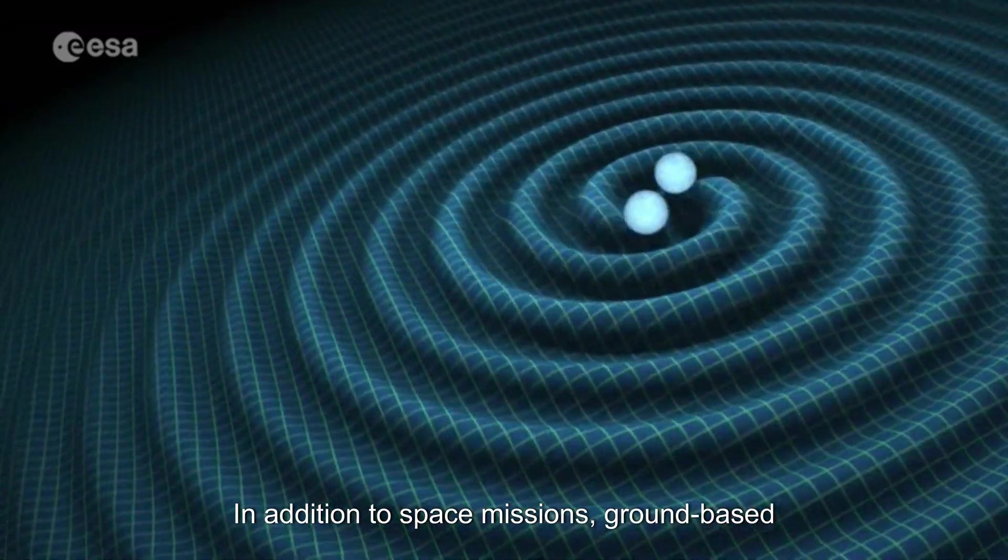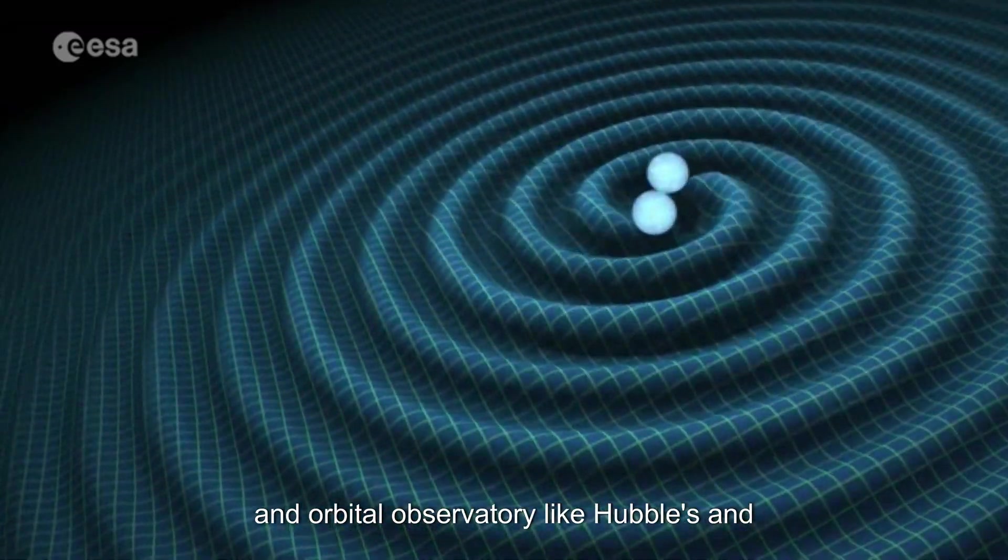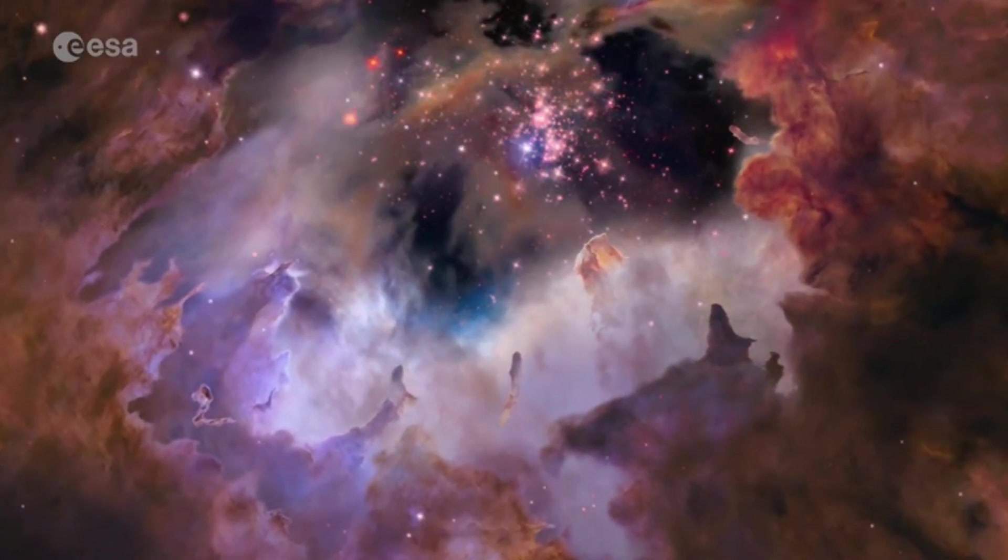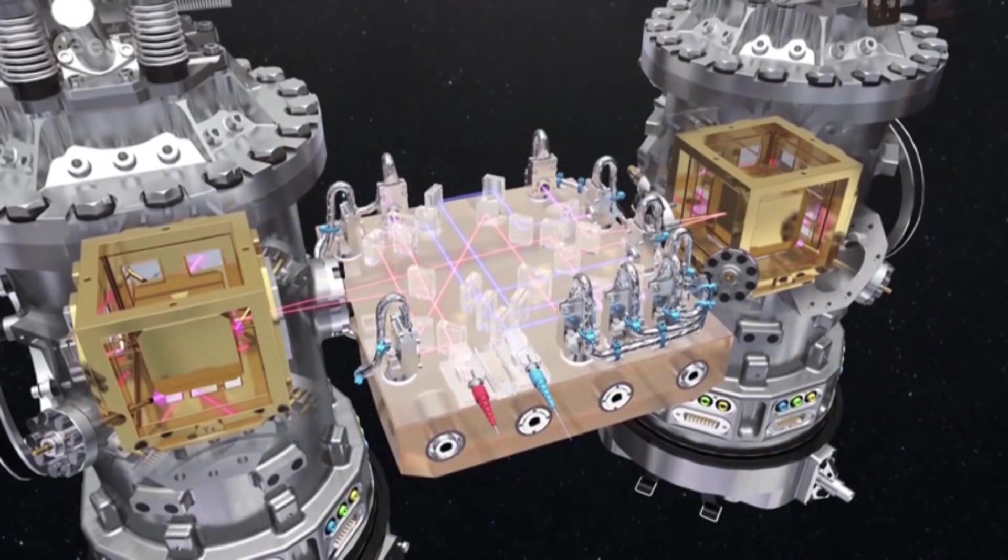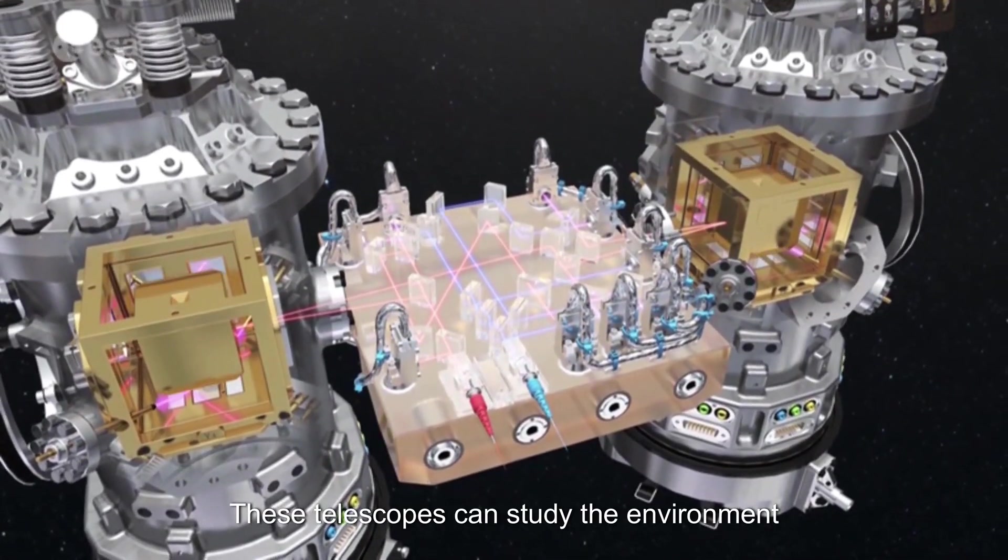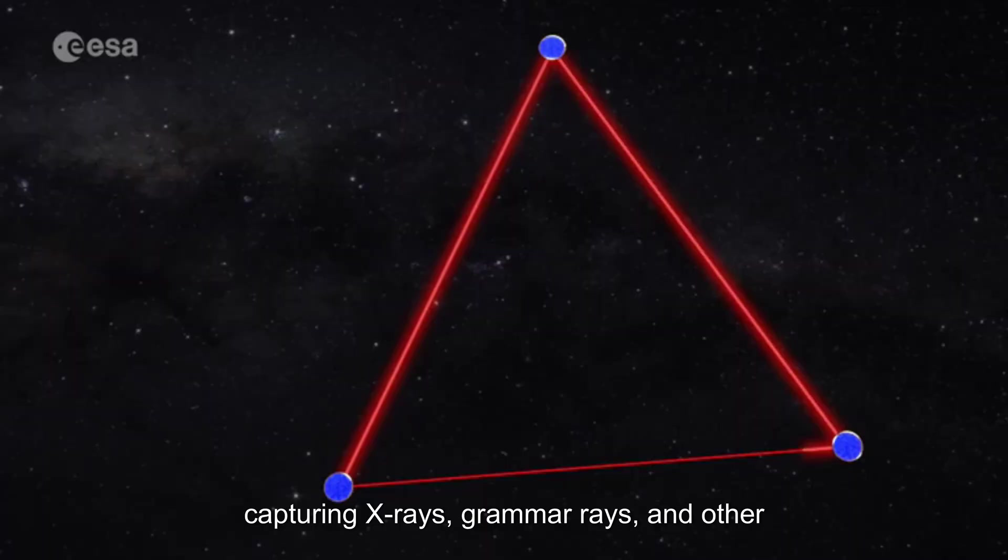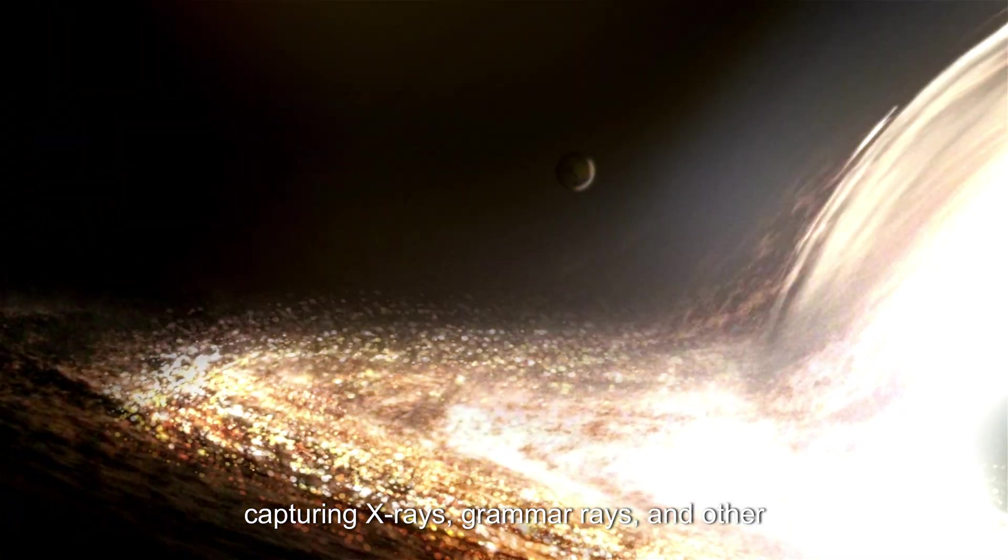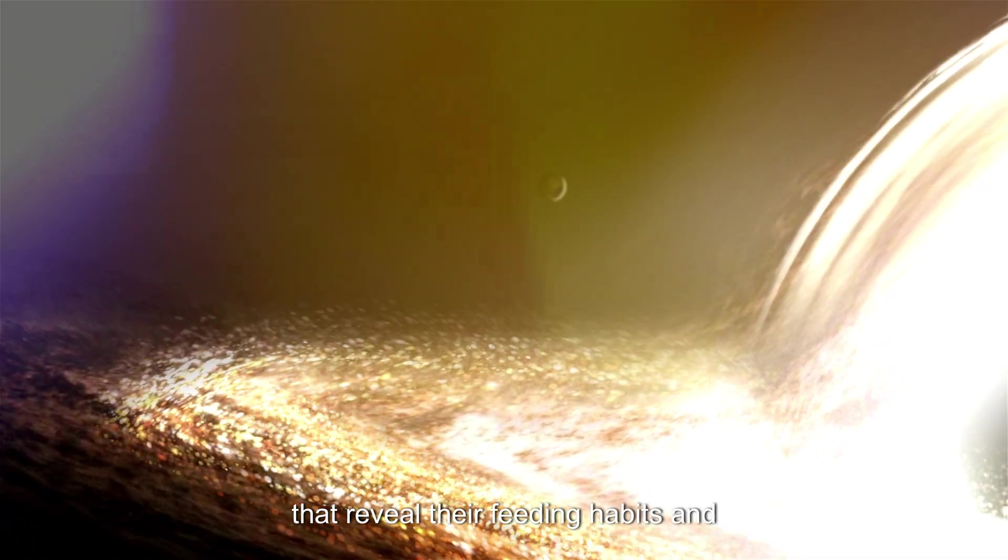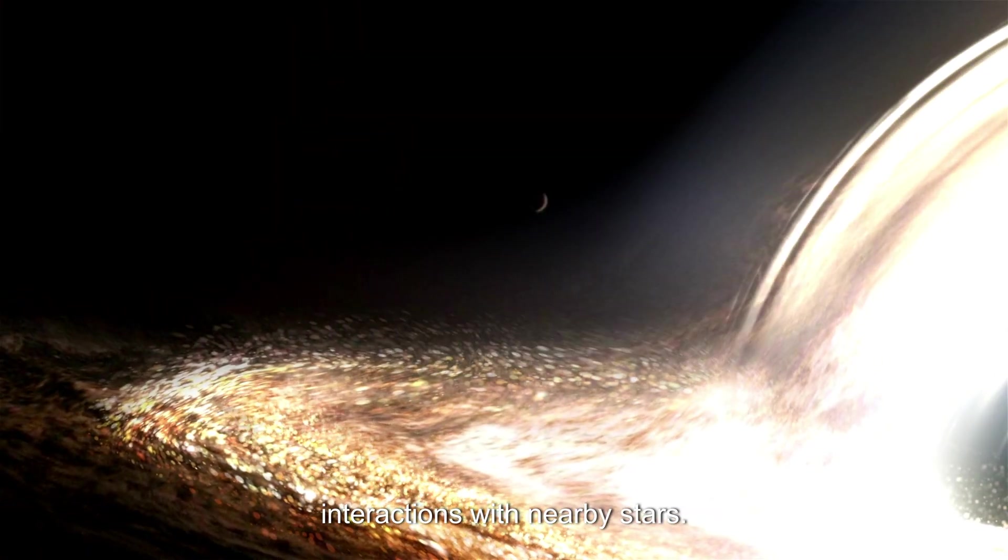In addition to space missions, ground-based and orbital observatories like Hubble and Chandra will continue to play crucial roles. These telescopes can study the environment around these black holes, capturing X-rays, gamma rays, and other signals that reveal their feeding habits and interactions with nearby stars.